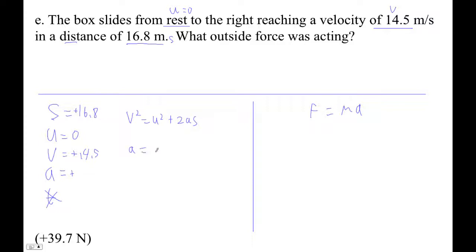Or A is V squared minus U squared over 2S. So it's equal to 14.5 squared minus 0 squared over 2 times 16.8.